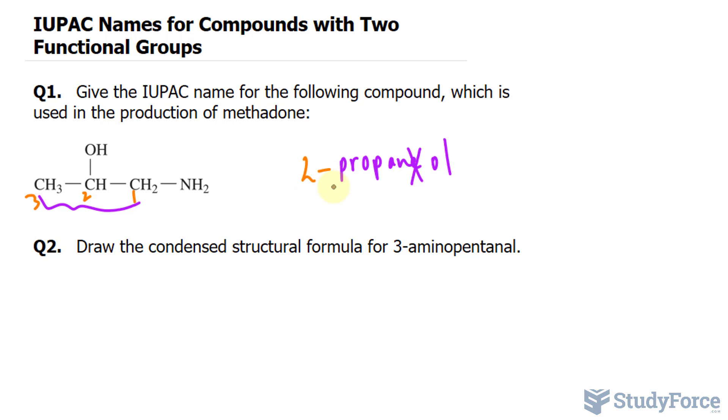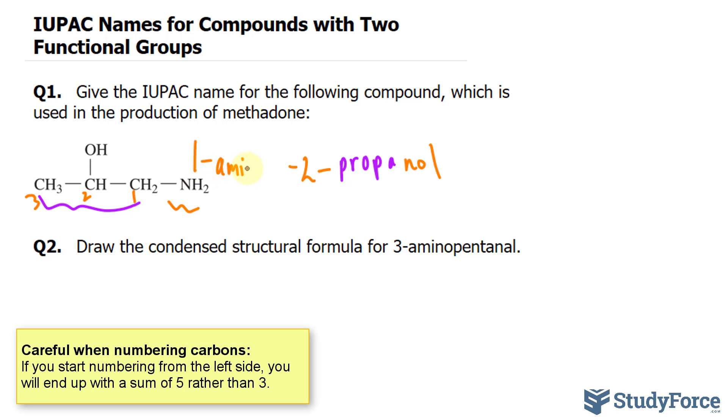So the base of this compound, its name is 2-propanol. Let me just rewrite that clearly. Next, we take into account this substituent. That's an amine. And because it's on the first carbon, we write down 1-amino-2-propanol.